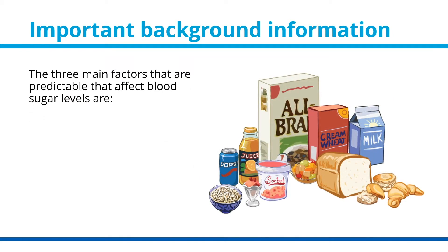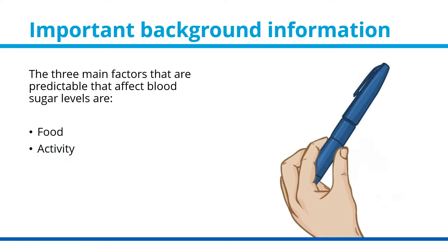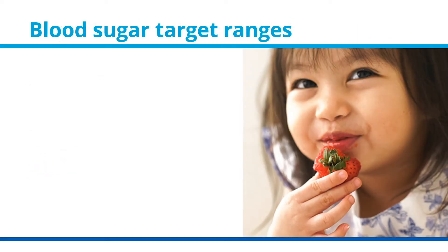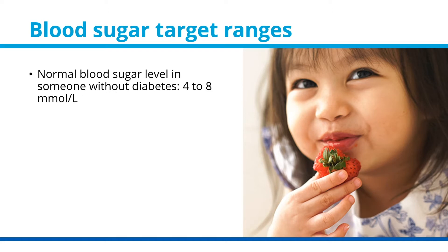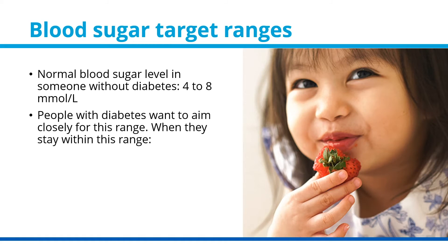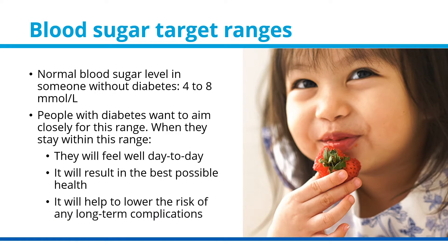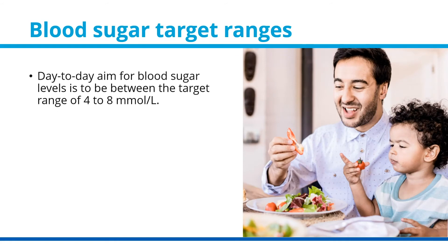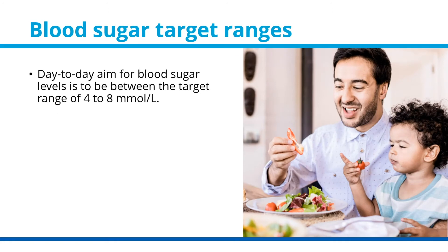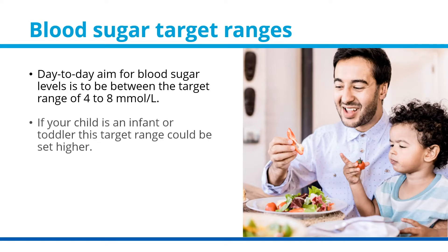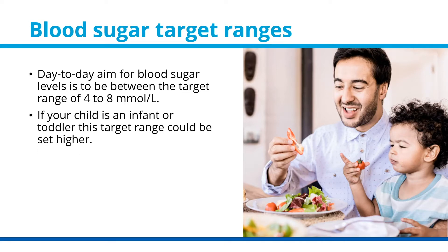The three main predictable factors that affect blood sugar levels are food, activity, and insulin. Blood sugar target ranges: a normal blood sugar level in someone without diabetes is from 4 to 8 millimoles per liter. People with diabetes want to aim closely for this range, as staying within it means feeling well day to day, achieving the best possible health, and lowering the risk of long-term complications. If your child is an infant or toddler, this target range could be set higher.